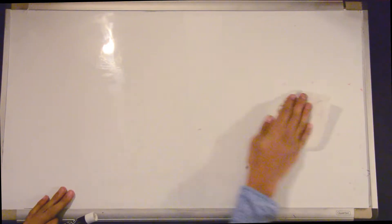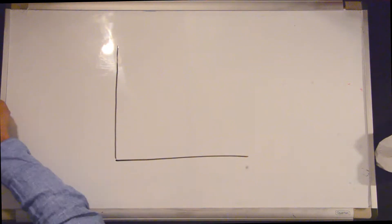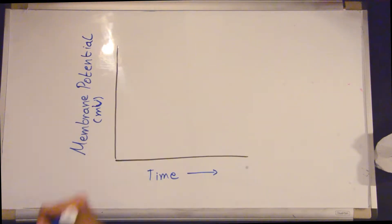Now moving on to the action potential graph. On the x-axis of the graph we have time, and on the y-axis of the graph we have membrane potential in millivolts.